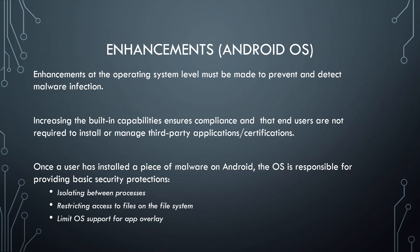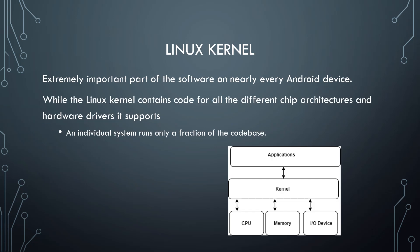Enhancements at the operating system level must be made to prevent and detect malware infection. Increasing built-in capabilities ensures compliance and that end users are not required to install or manage third-party applications or certifications. Once a user has installed an application on Android, the OS is responsible for providing basic security protections including isolation between processes, restricting access to files on the file system, and limiting OS support for app overlay attacks. The Linux kernel is an extremely important part of the software on every Android device, containing code for all different chip architectures and hardware devices it supports.